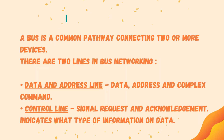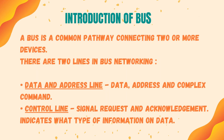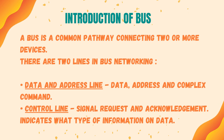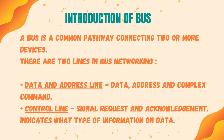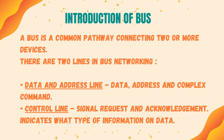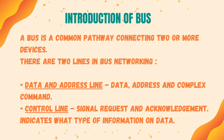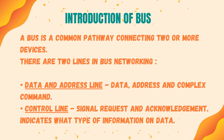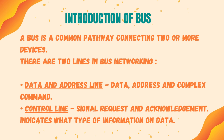A bus is a common pathway connecting two or more devices. There are two lines in bus networking: the data and address line, and the control line which carries signals for request and acknowledgement, indicating what type of information is on the data line.